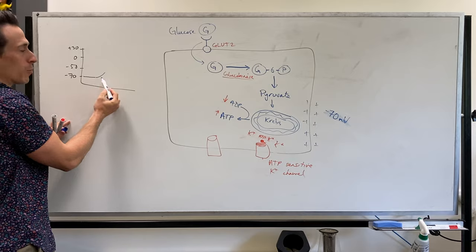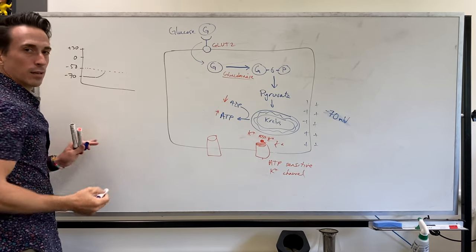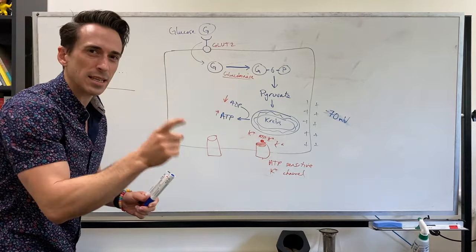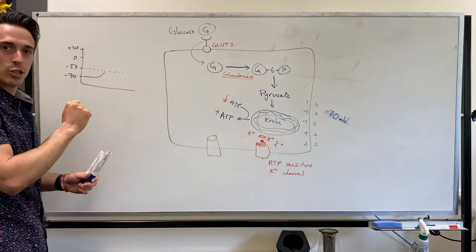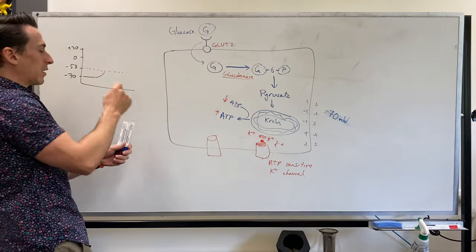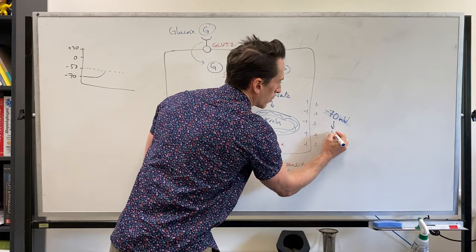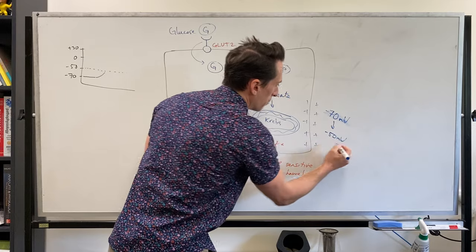If it becomes so positive that it hits negative 50, well this is when this other channel kicks into play. This channel is sensitive to charge. So what will happen is once we hit negative 50 millivolts, which is now what's happened, we've now gone to negative 50 millivolts, this channel opens its lid and it's a calcium channel.